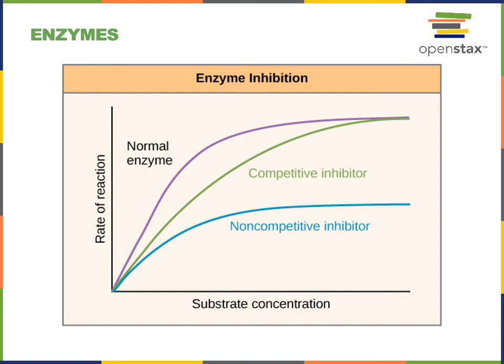In some cases, the non-competitive inhibitor binding to the allosteric site will change the shape of the enzyme so that the substrate cannot bind to the active site. Therefore, increasing substrate concentration will only increase the activity of enzymes not bound to a non-competitive inhibitor, while all enzymes bound to a non-competitive inhibitor are effectively removed from solution because they cannot catalyze the chemical reaction.